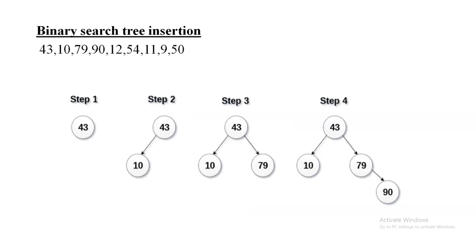In a binary search tree, certain operations are performed: insertion, deletion, searching, find max, and find min. In this lecture we will discuss insertion. Given a set of nodes, we insert them one by one. The first node, 43, is always the root node.